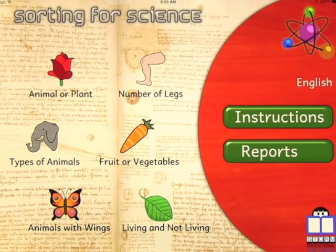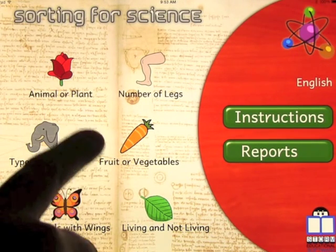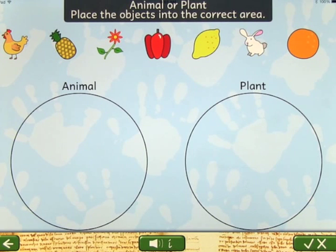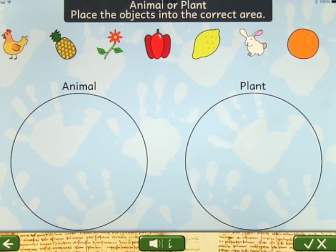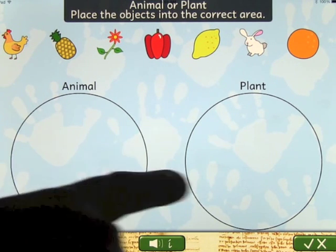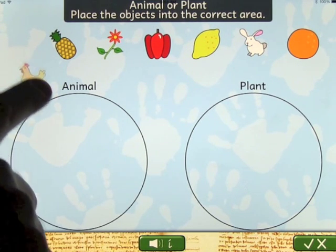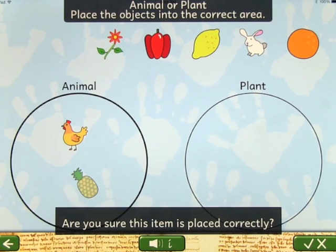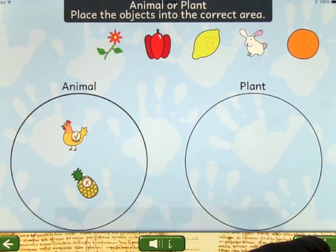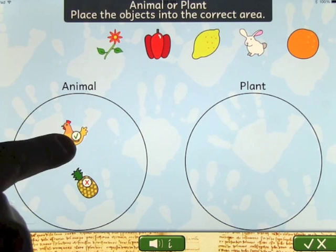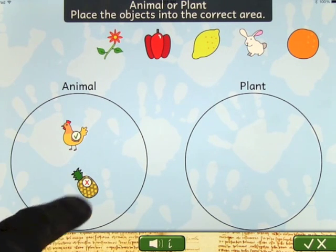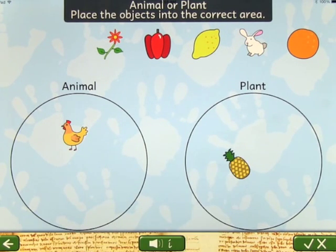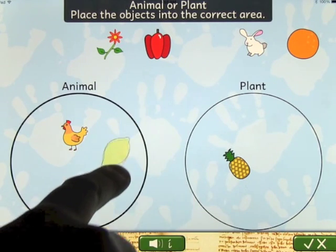When we come to the home screen we've got the six categories. Let's start with Animal or Plant. The pictures change every time you do it, so it varies. The idea is basically to drag them into the correct circle. If you get it wrong it'll ask if you're sure that's where it goes. If you press the check mark down here you also get a cross or a check mark showing whether it's right or in the wrong place.